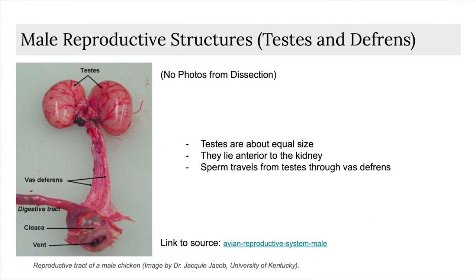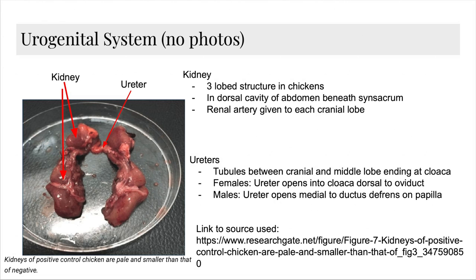Now we'll quickly move on to the topic of the male reproductive organs. The testes, which are located anterior to the kidney, are about equal size. Like other species, the function of this structure is to store sperm and allow for its transport through the vas deferens. Moving on to the urogenital system, we will begin examining the kidneys. This is a three-lobed structure in chickens, located within the dorsal cavity of the abdomen beneath the synsacrum. This structure is the site of urine production through a process known as glomerular filtration. Next are the ureters, located between the cranial and medial lobe, running to the aorta and ending at the cloaca. In females, the structure opens into the cloaca dorsal to the oviduct. Conversely, in males, the ureters open medial to the ductus deferens on the papilla.